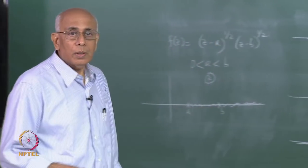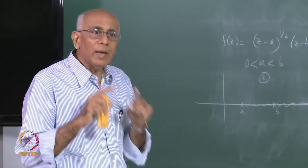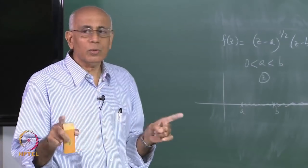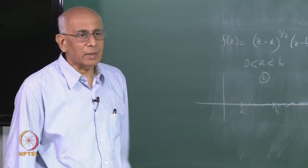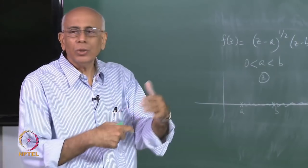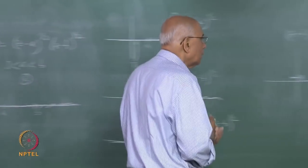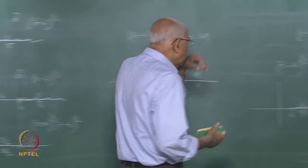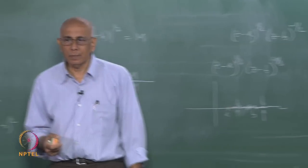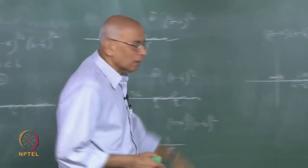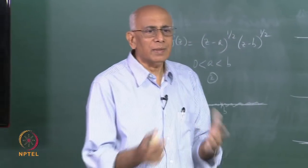That works only for the square root branch cut. If you have two square root branch cuts, the product of those two factors gives a finite cut. The ratio of two such square root functions can also have a finite cut, but not a general product. For the product you need factors each of half-power. Some of these tricks are possible simply because these things have finite cuts.